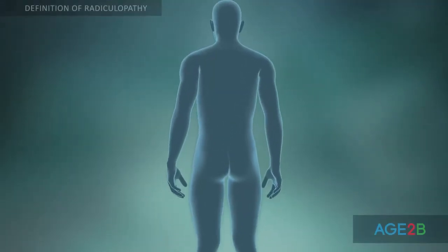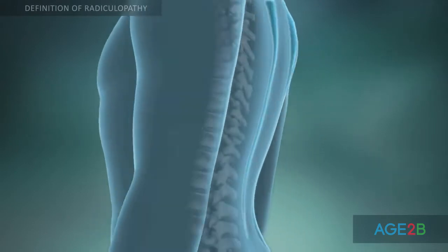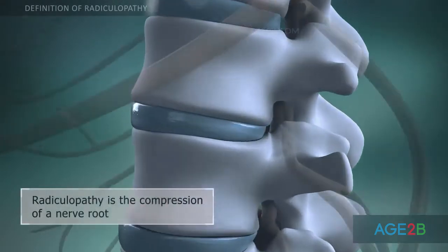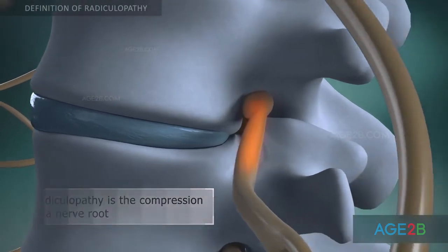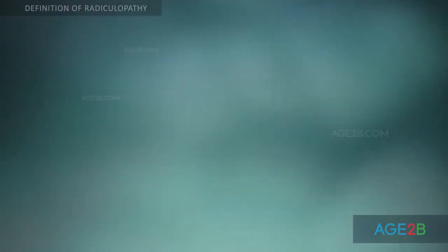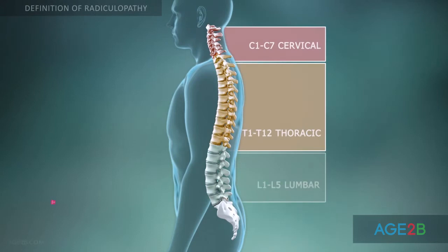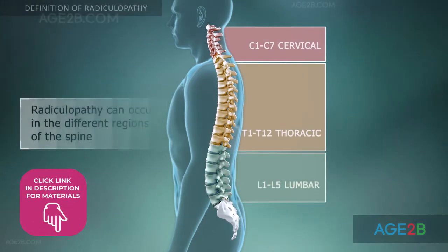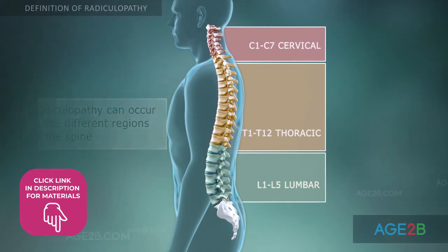Radiculopathy is a condition that occurs when an intervertebral nerve root in one of the various regions of the spine is compressed or pinched. There are three types of radiculopathy: cervical, thoracic, and lumbar. They occur due to compression of nerve roots in these respective portions of the spine.